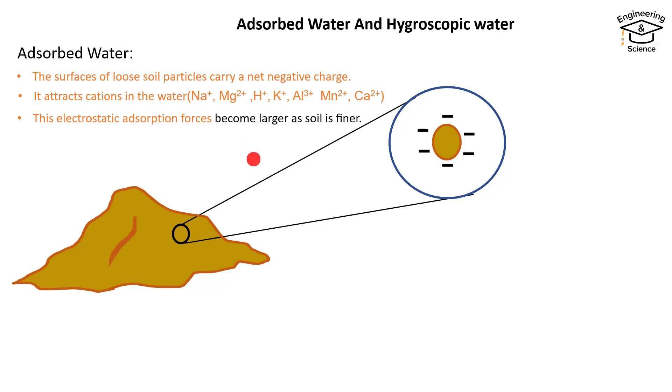This electrostatic force is larger as the soil is finer. Whenever the soil particle is larger, the negative charge will be less.